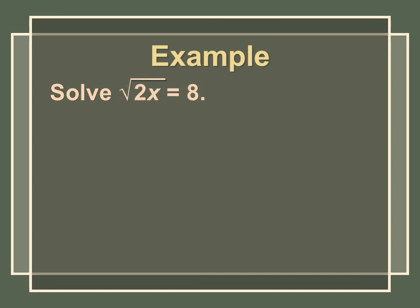Go ahead and try this last one. The radical is already isolated, so you can start by squaring both sides to get 2x = 64. Then divide by 2 and you get x = 32.